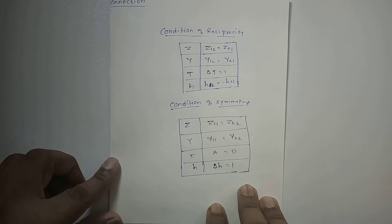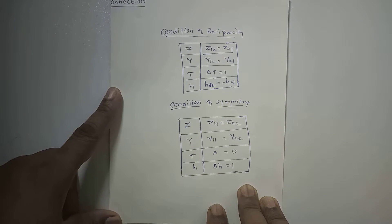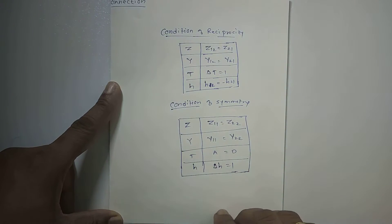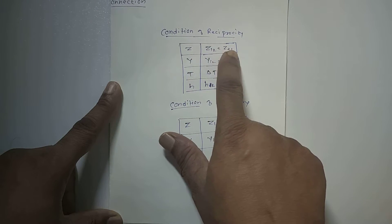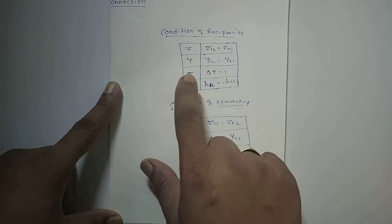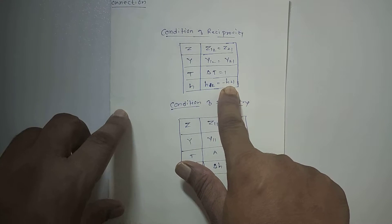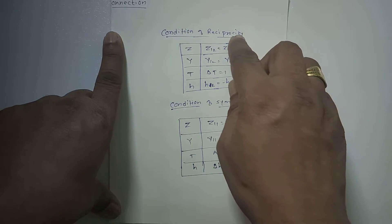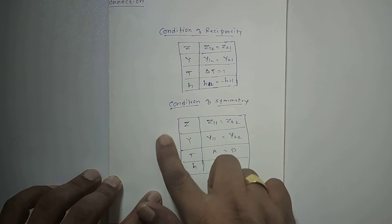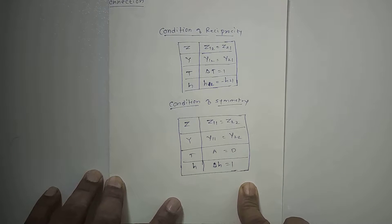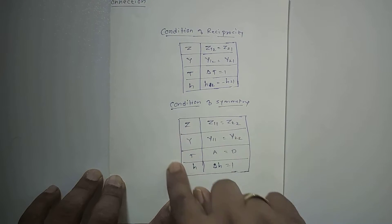Hello everyone. Last time we have seen the condition of reciprocity and condition of symmetry of all four basic parameters. Now we are going to summarize it. Condition of reciprocity: for z parameter, z12 is equal to z21; for y parameter, y12 is equal to y21; for t parameter, delta-t is equal to 1; and for h parameter, h12 is equal to minus h21. For a given network, if any one of these conditions is satisfied, the network is reciprocal. Similarly, if any one condition of symmetry for all four parameters is satisfied, the network is a symmetrical network.